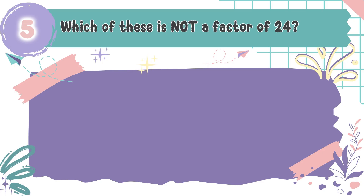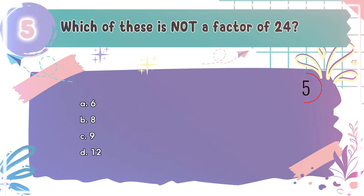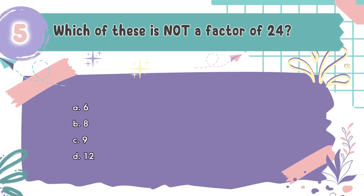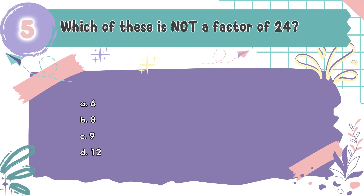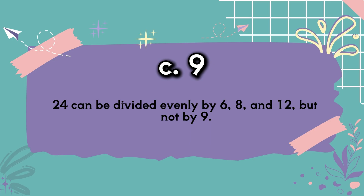Question number 5: Which of these is not a factor of 24? The choices are A: 6, B: 8, C: 9, D: 12. The correct answer is C, 9. 24 can be divided evenly by 6, 8, and 12, but not by 9.